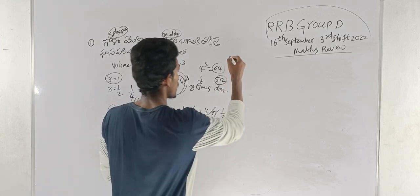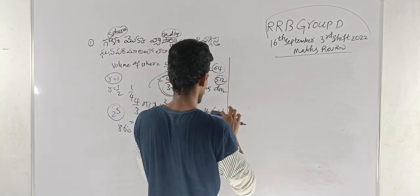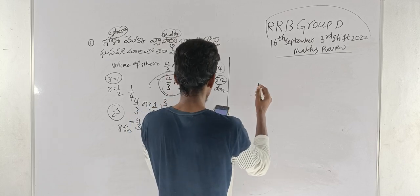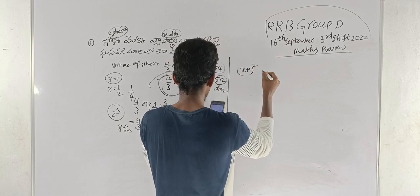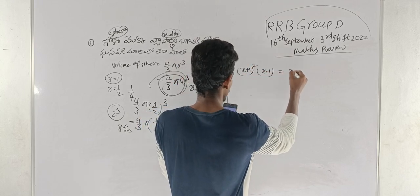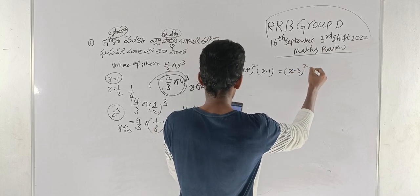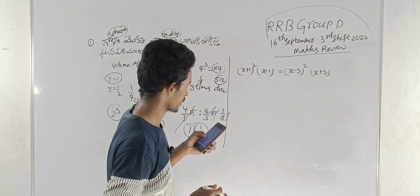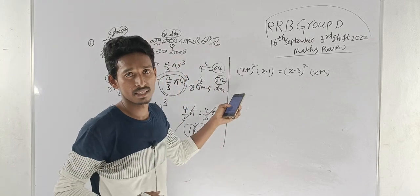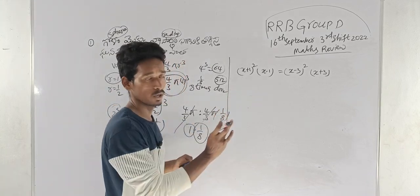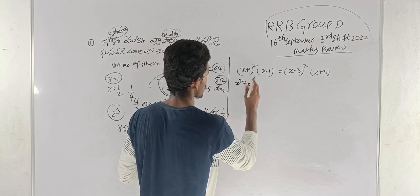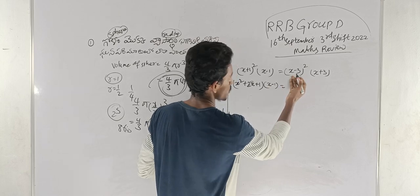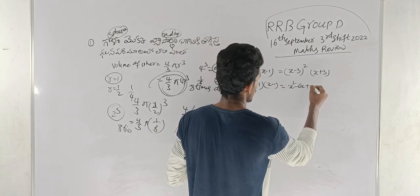Next question. This equation: (x + 1) whole square into (x − 1) is equal to (x − 3)(x + 3). Okay, this equation is to be solved. This formula is equal to A plus B whole square. And x² + 2x + 1, multiplied by (x − 1). This is equal to A minus B whole square: x² − 6x + 9.